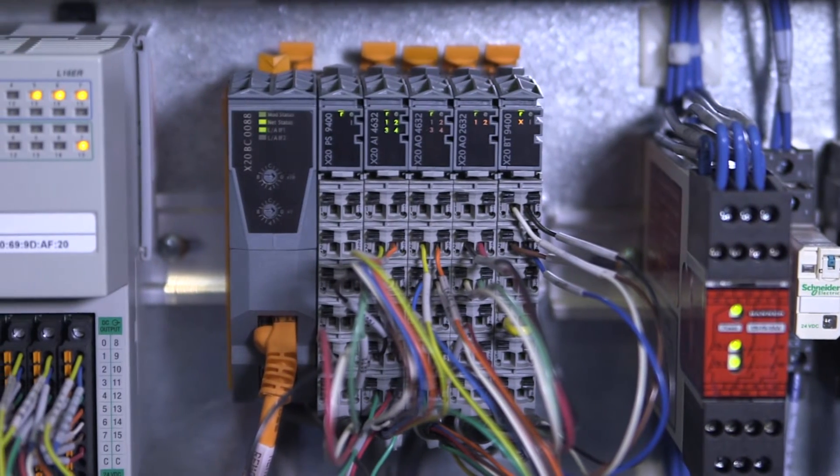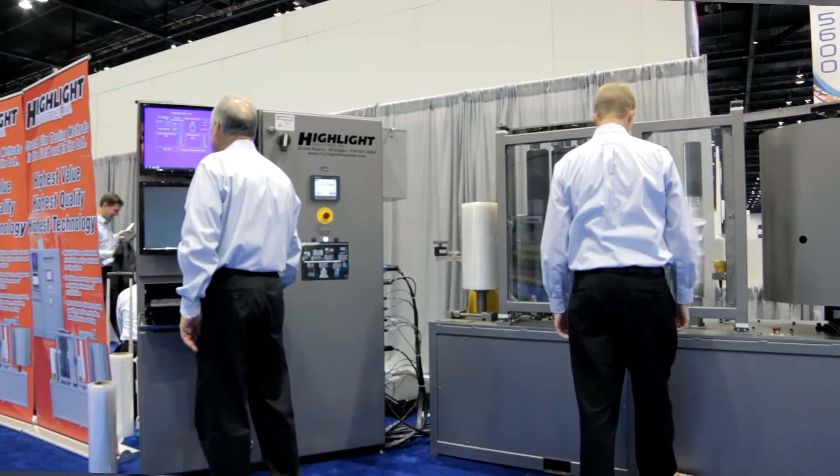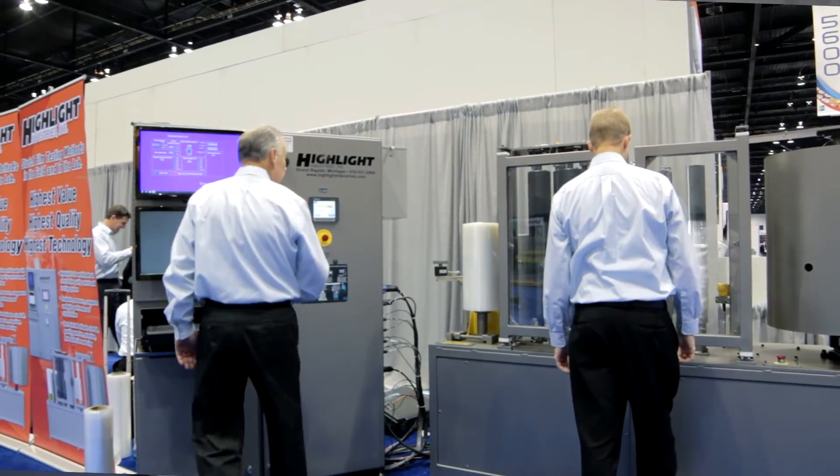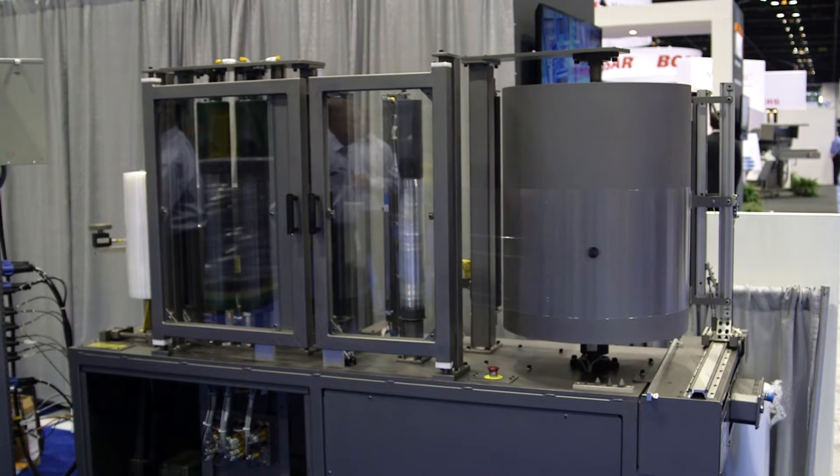This system will quality control check the film and take it to its maximum elongation starting at zero and going up to 400% or beyond depending upon the film.